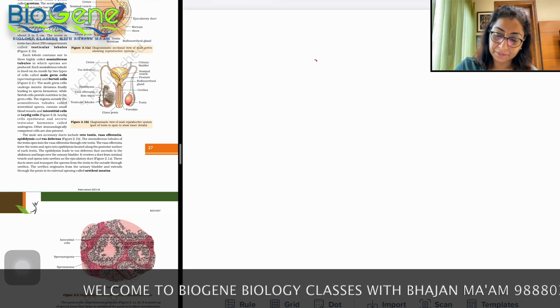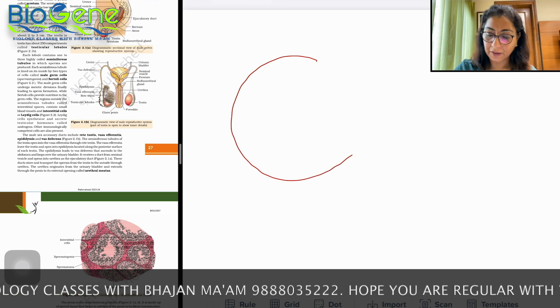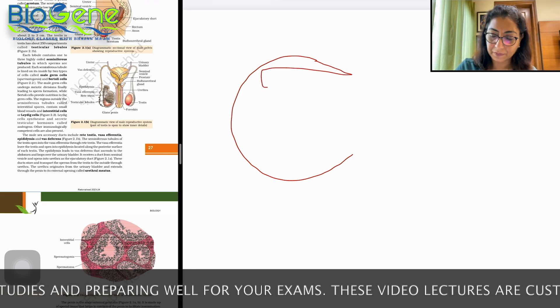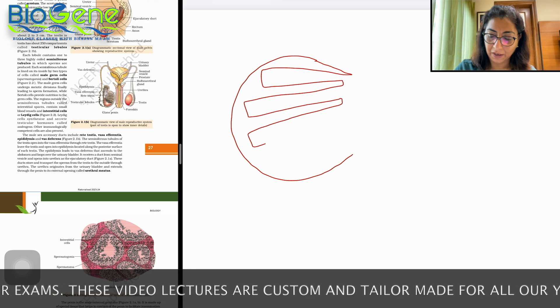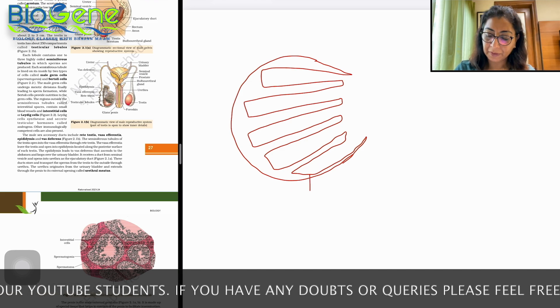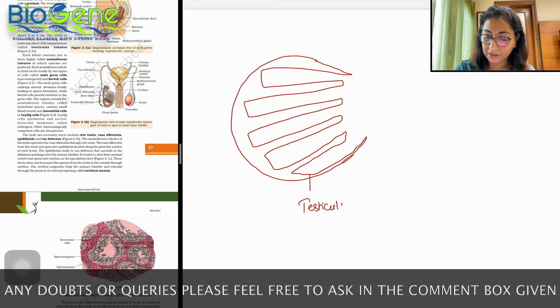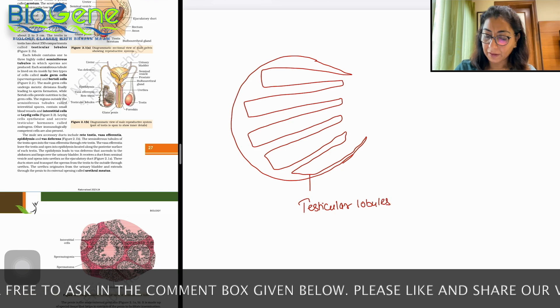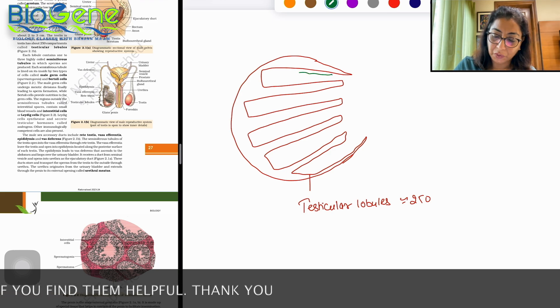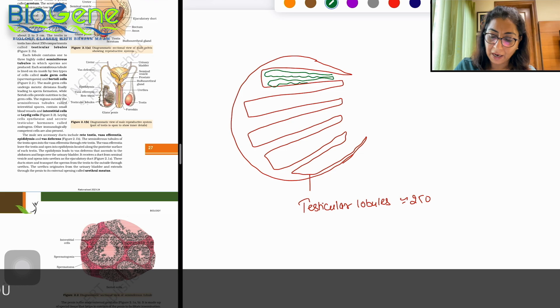This is the tunica albuginea. Now this tunica albuginea invaginates like this. And these are the compartments. These compartments are formed inside the testes. How many compartments are made? These are called testicular lobules and these testicular lobules are approximately 250 in number. Now inside this we have 1 to 3. We have 3 highly coiled structures. For the sake of convenience I have made 1 here, 2 of them.